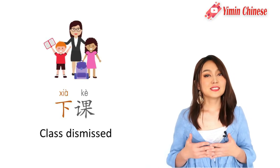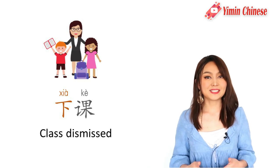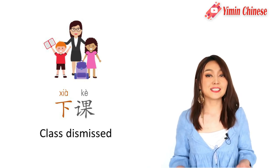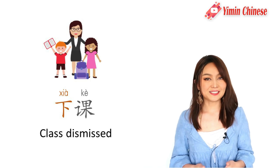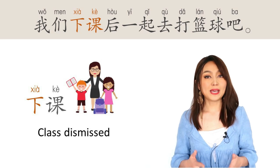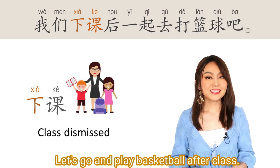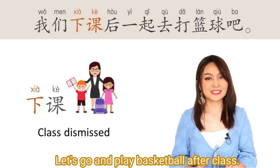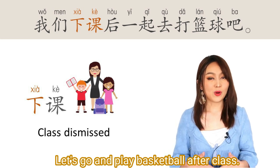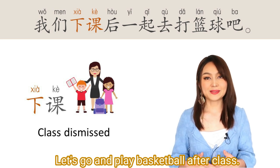下课 — class dismissed. The teacher will say this when the class is over. 下课. Another example: 我们下课后一起去打篮球吧. Let's go play basketball after class. 我们下课后一起去打篮球吧.